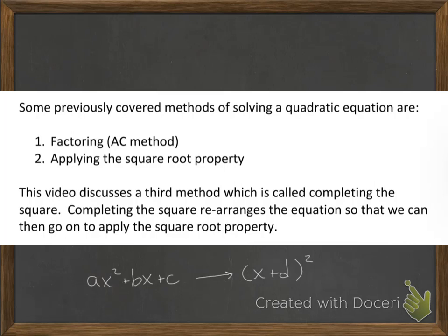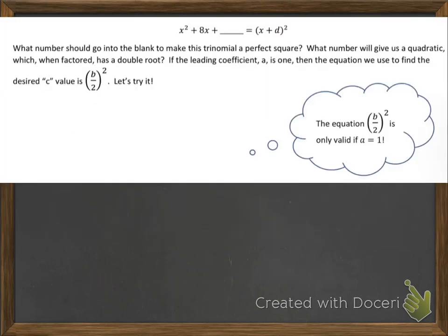Completing the square rearranges the equation so that we can then apply the square root property. In other words, we'll have some general quadratic that looks like ax squared plus bx plus c, and then we force it — we pull out a perfect square from that. Let's take the example x squared plus 8x plus something. We want to make this into a perfect square. What number should go in the blank to make this trinomial a perfect square? If the leading coefficient a is 1, then the equation we use to find the desired value c is b over 2, quantity squared.